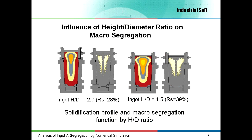In the next three slides you will see how the H-D ratio, ingot taper and mold thickness have influence on the macro-segregation area size. To analyze the influence of ingot H-D ratio on A-segregation, I made two simulations: for one, the H-D ratio has been 1.5; for the second one, 2.0. The weight of both ingots has been 50 tons. These pictures present the solidification profile and A-segregation prediction. The parameter Rs is defined as the ratio between the area affected by segregation and the total area of the longitudinal section of the ingot. As seen, in both ingots the segregation will appear, but the area affected is larger if the H-D ratio is low. So if we like to minimize macro-segregation in this particular ingot, a high H-D ratio is recommended.